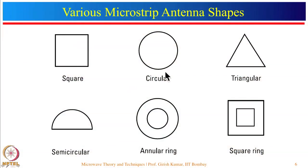I had shown the configuration of only a rectangular microstrip antenna; however, there are many different shapes reported in the literature: square, circular, triangular, semicircular, annular ring, square ring, pentagon, hexagon, and so on. But today in my lecture I am going to focus mainly on the rectangular microstrip antenna.